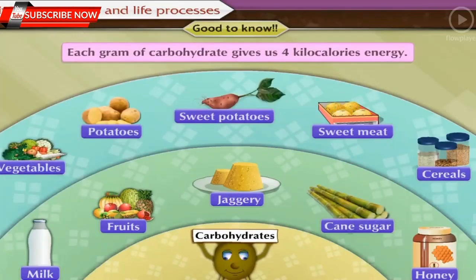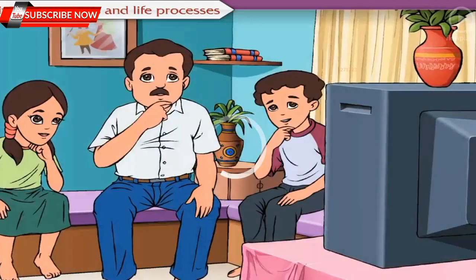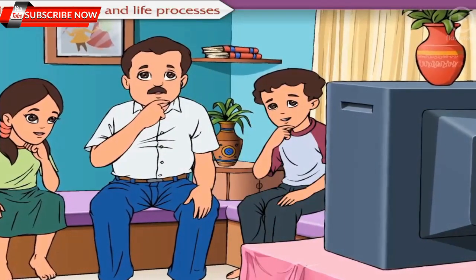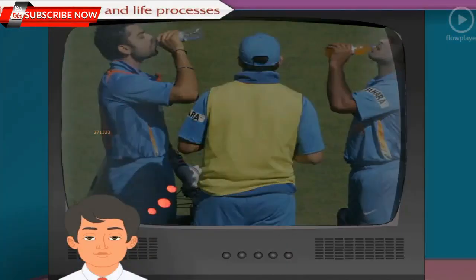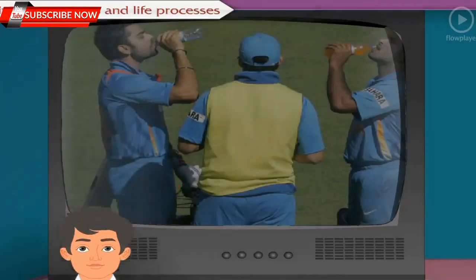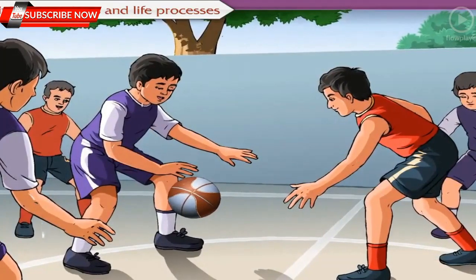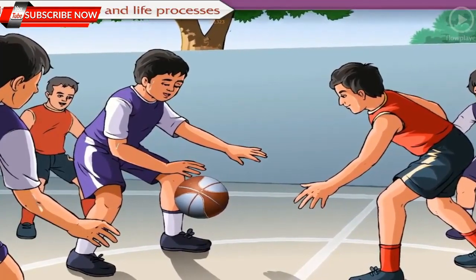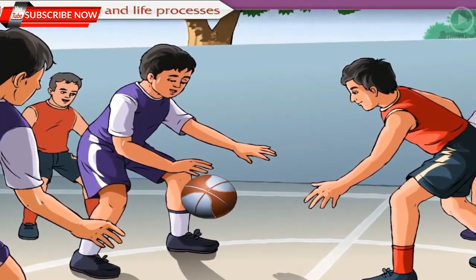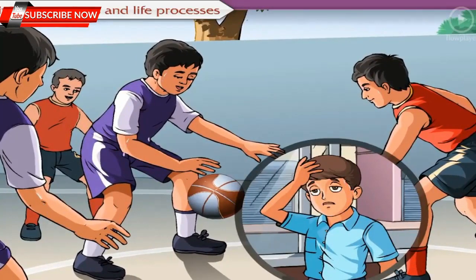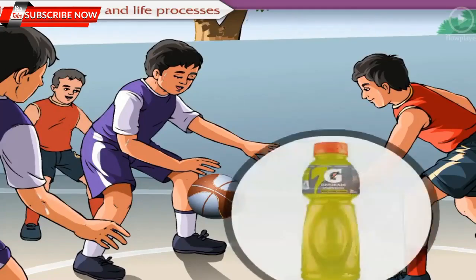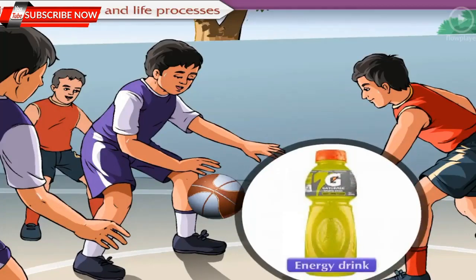Each gram of carbohydrate gives us four kilocalorie energy. While watching a match on TV, we generally see players consuming some foodstuffs during breaks. Due to physical exertion during a match, the body of the players loses a lot of water and salts in the form of sweat, making them feel tired and in need of instant energy. For this, they consume energy drinks which contain water, salt, and glucose, which boosts their energy.